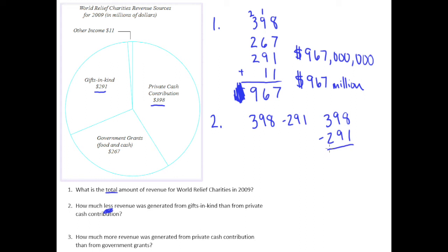Of course, we'll set this up as a vertical subtraction problem. This is kind of nice. I don't have to do any borrowing here. 8 minus 1 is 7, 9 minus 9 is 0, 3 minus 2 is 1. But again, what answer are we going to give? We're going to give 107 million dollars, making sure that we label our answer correctly.